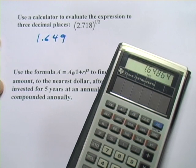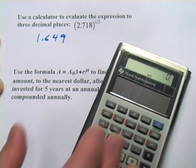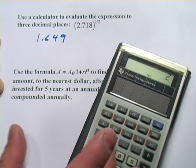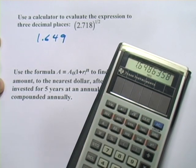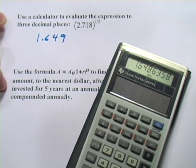Now we can test this to make sure it worked because when you raise something to the one-half power, that's actually the same as taking its square root. So I'm going to type in 2.718 again and then take the square root. And lo and behold, I get 1.649 again.